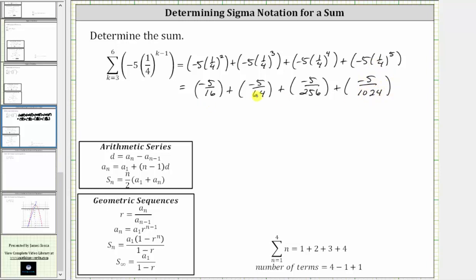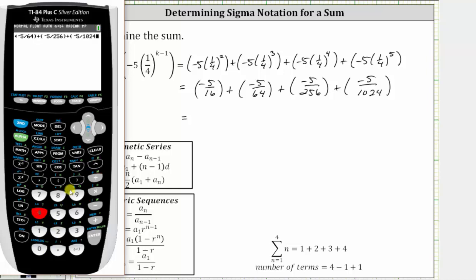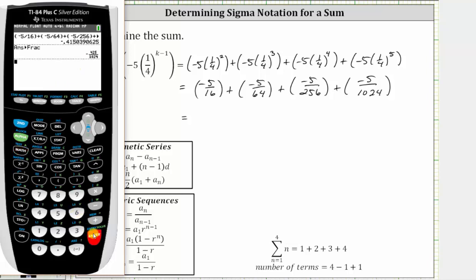Now let's go to the calculator and determine the sum. Let's convert the sum to a fraction by pressing Math, Enter, Enter. The sum is negative 425 over 1,024.